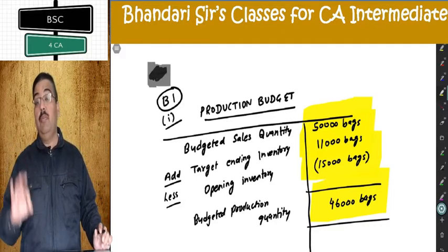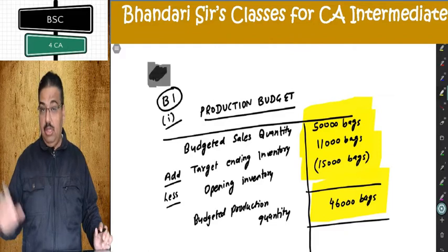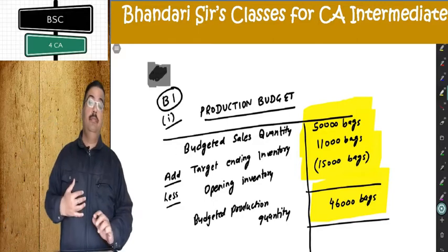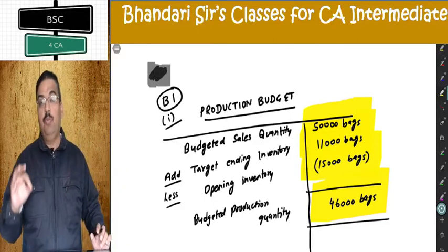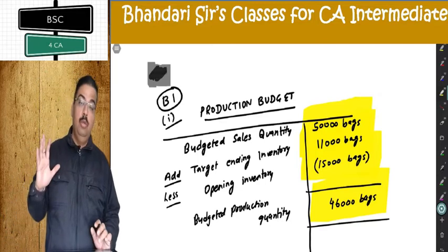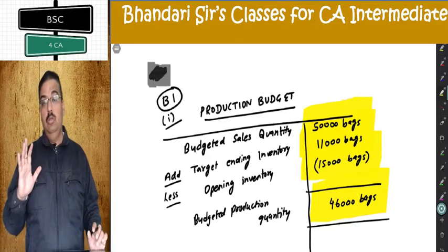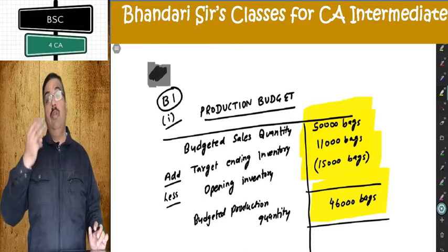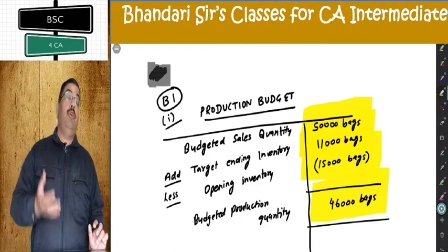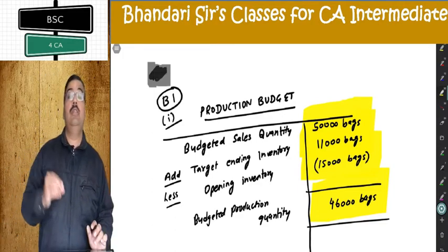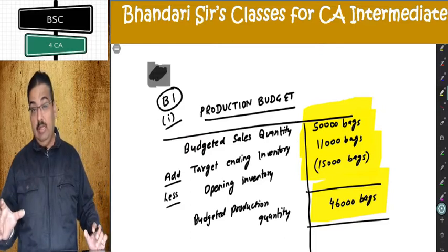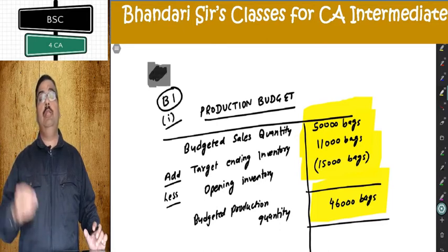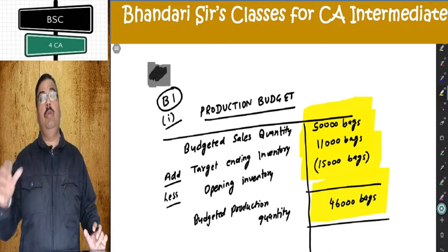This figure of 46,000 is very important because consumption is based on production, not on sale. Based on consumption will be purchase. I need input-output ratios. Reaching part number 2 — making the purchase budget. The sequence is: first sale, second production, third consumption, fourth purchase. In consumption I adjust stocks of materials to get the purchase. This sequence is exactly the same in all questions — only the number of products or materials may vary, but concepts remain the same.